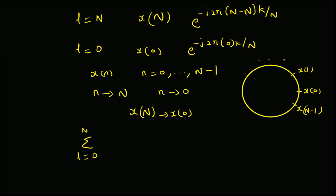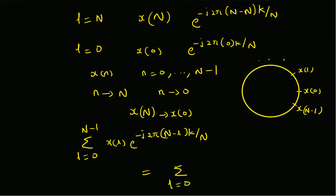Therefore we can change the summation back to l=0 to N-1. For l=1 to N-1 the sequence is the same, but for the term l=N we replace it with l=0. So we have summation of x[l] times e^(-j2π(N-l)k/N). Since e^(-j2πNk/N) equals 1, we can simplify this.